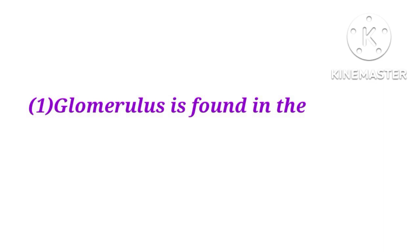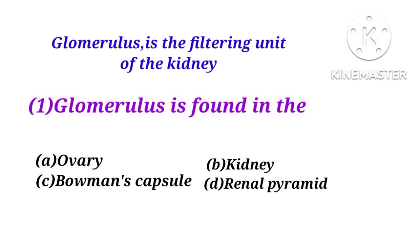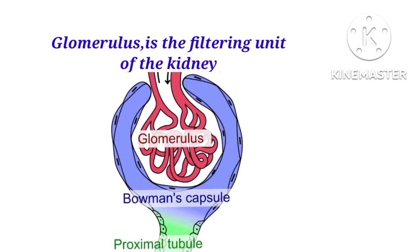Question number 1. Glomerulus is found in the ovary, kidney, Bowman's capsule, or renal pyramid? The answer is C. The glomerulus is the filtering unit of the kidney and it is found in the Bowman's capsule.